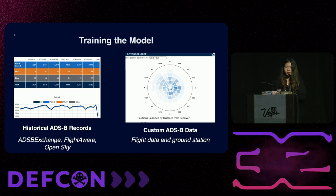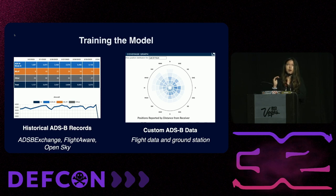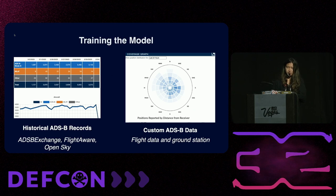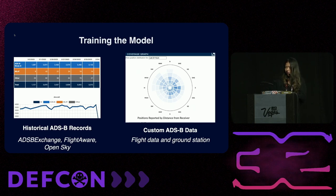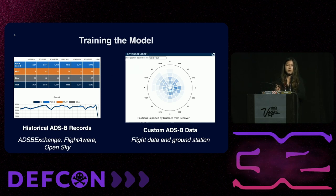For training data, I used historical ADS-B records from a wide range of sources. ADS-B Exchange had datasets going back to the 2000s, FlightAware was another great source, and OpenSky as well. I downloaded archives of their ADS-B CSV records, and also collected data from my own ground station and the device. All signals passed through the dump1090 decoder were saved into CSV records to be fed into the model.